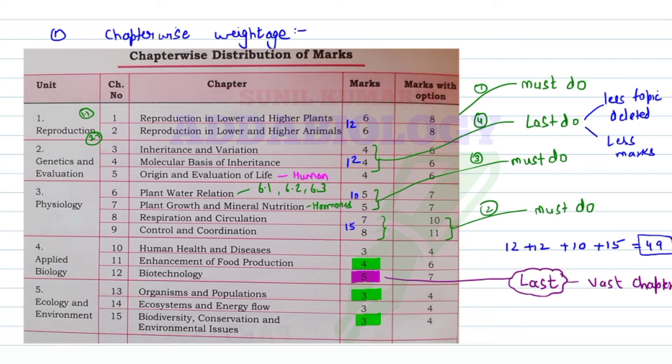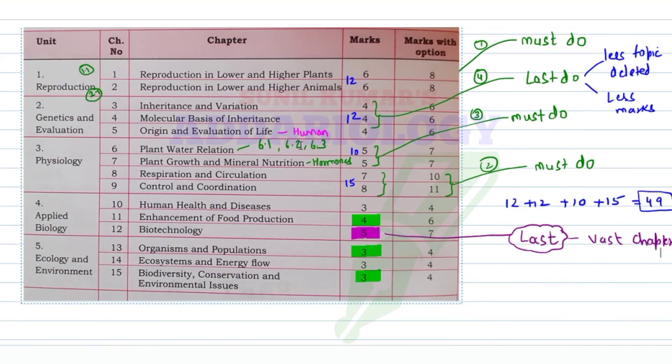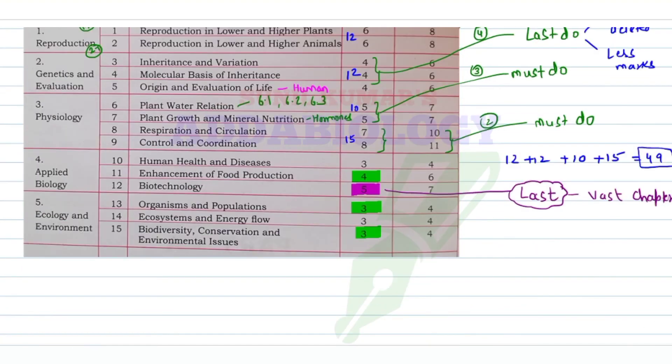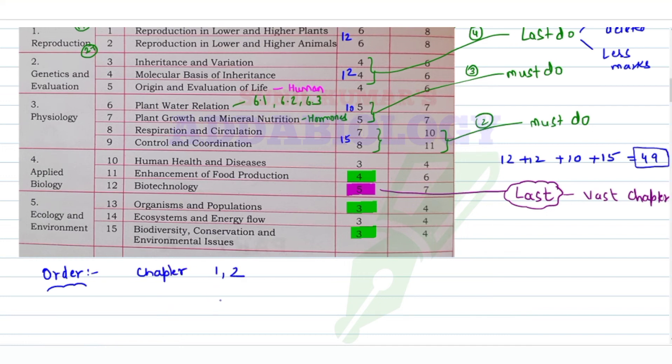Now hard work will not help, smart work is going to help. Make a proper strategy, follow these chapters in order. First do chapter 1 and 2, once done go for 8 and 9, after that 6 and 7, then 3, 4, and 5, and at the last, chapters 11, 13, 15, and 12.